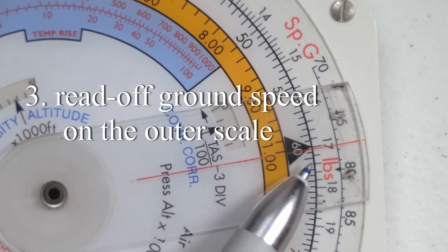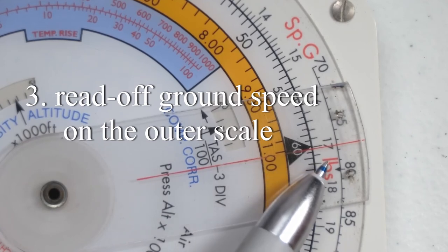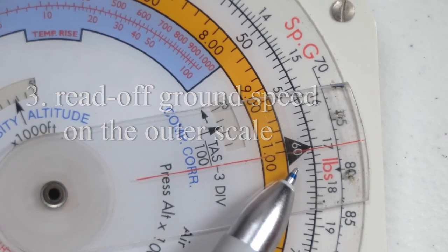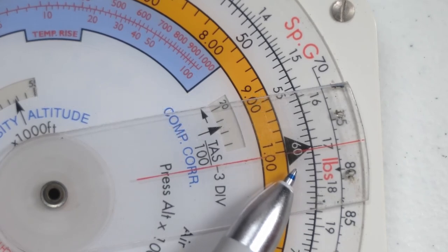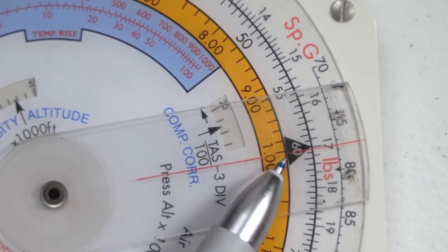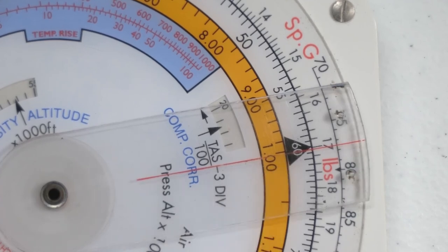So speed is distance over time. Our ground speed would be 170 knots in 60 minutes, 170 per hour. And that is all there is to it.